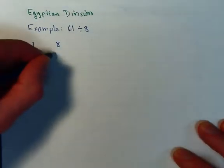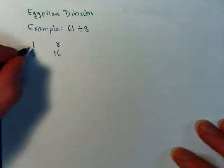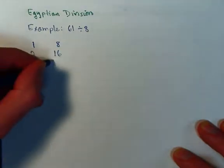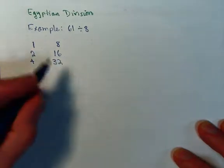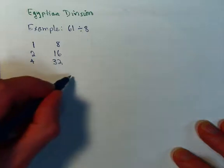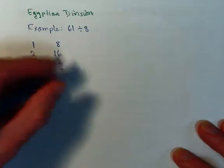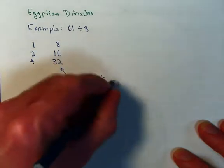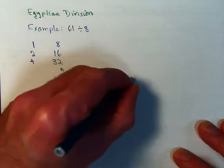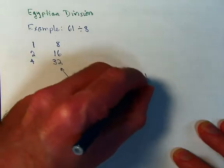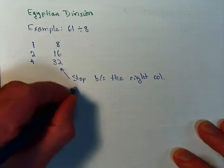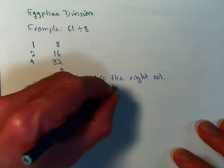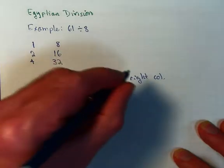As before, we proceed with some doublings. Double the 1, we get a 2, double the 8 for a 16. Then we get a 4 and a 32. Now, at this point, I would stop because these entries in the right-hand column would exceed my dividend of 61.